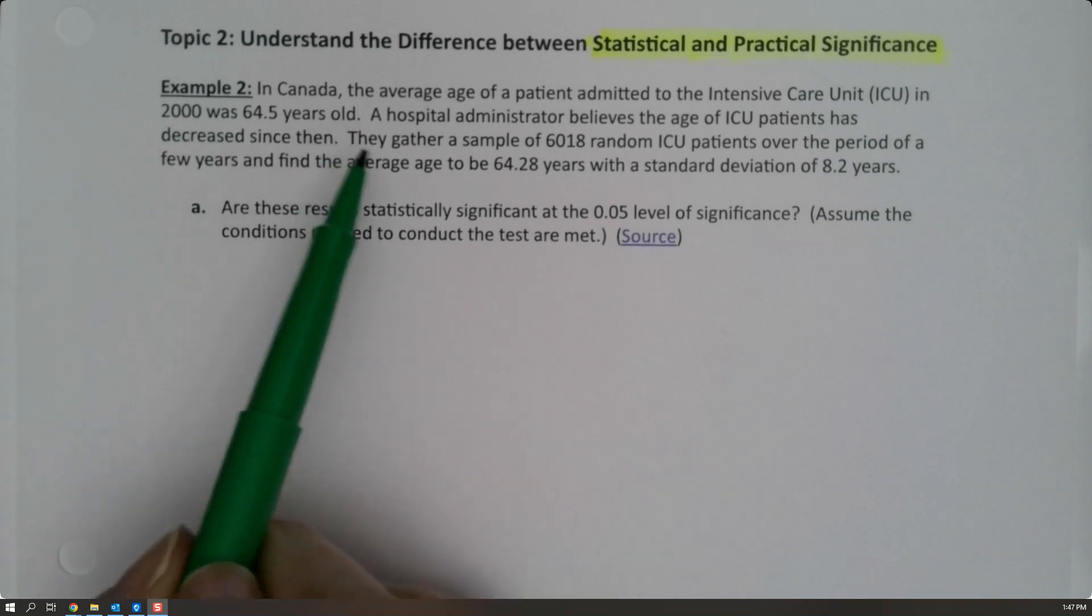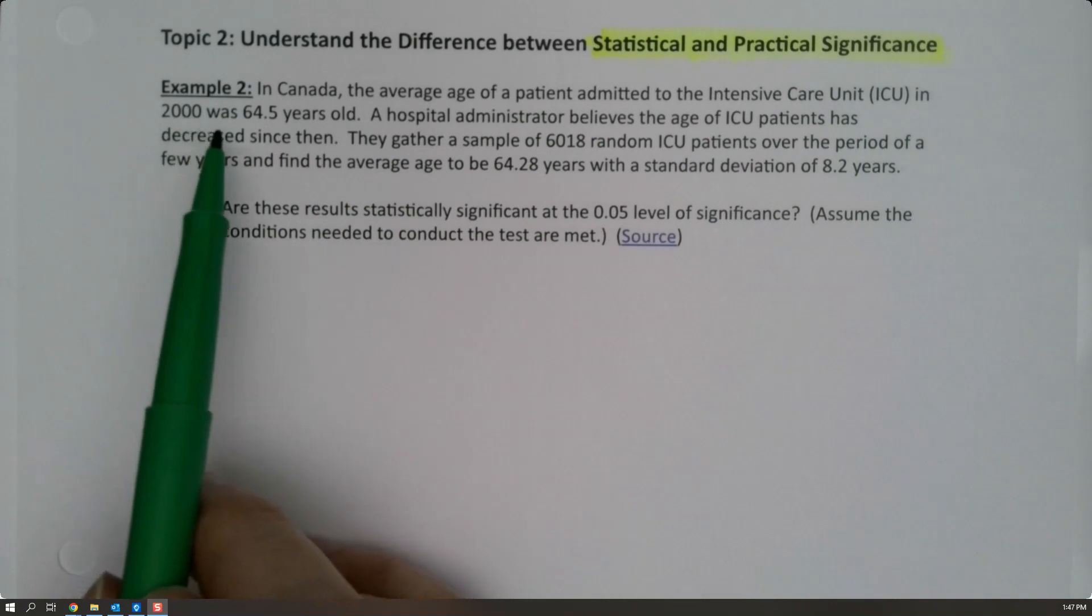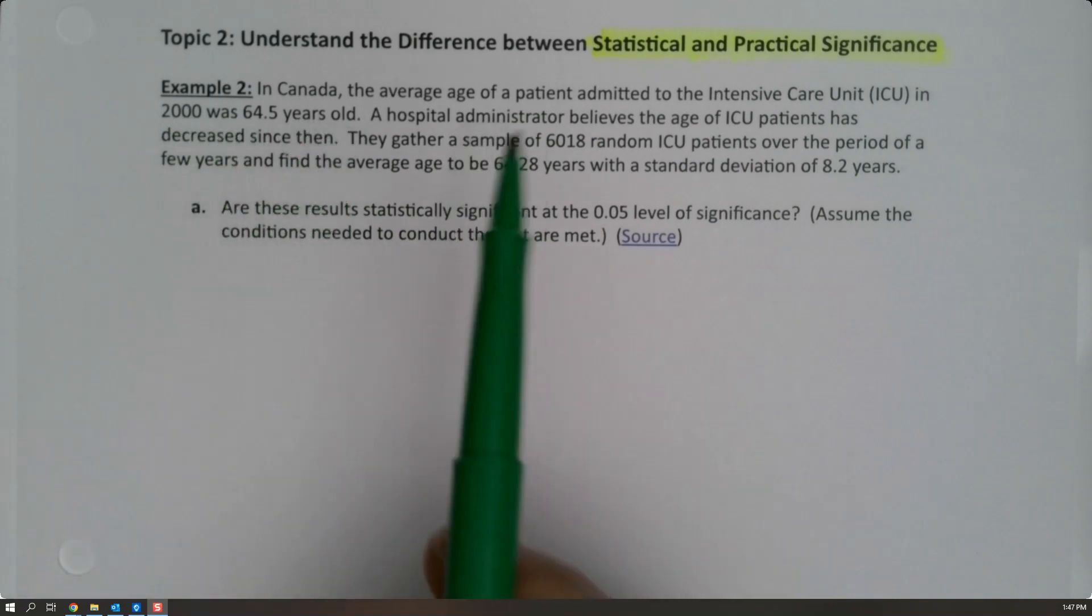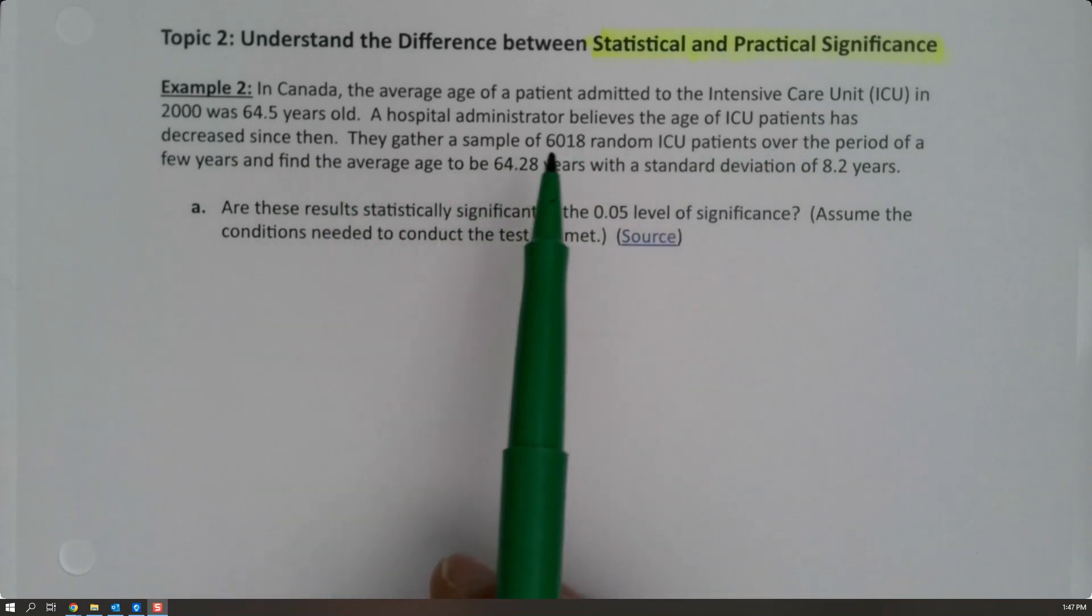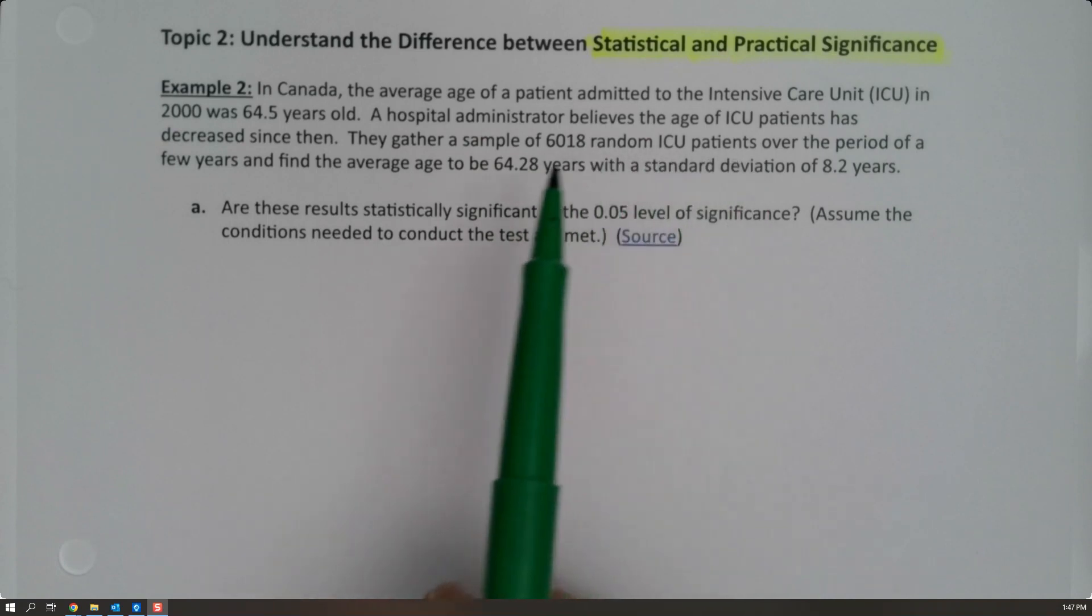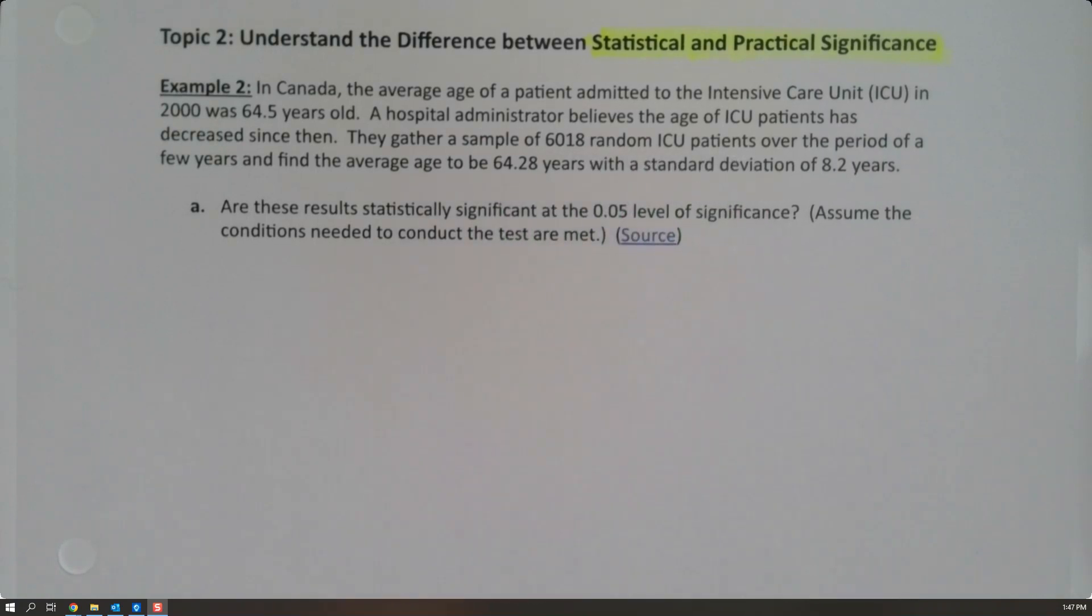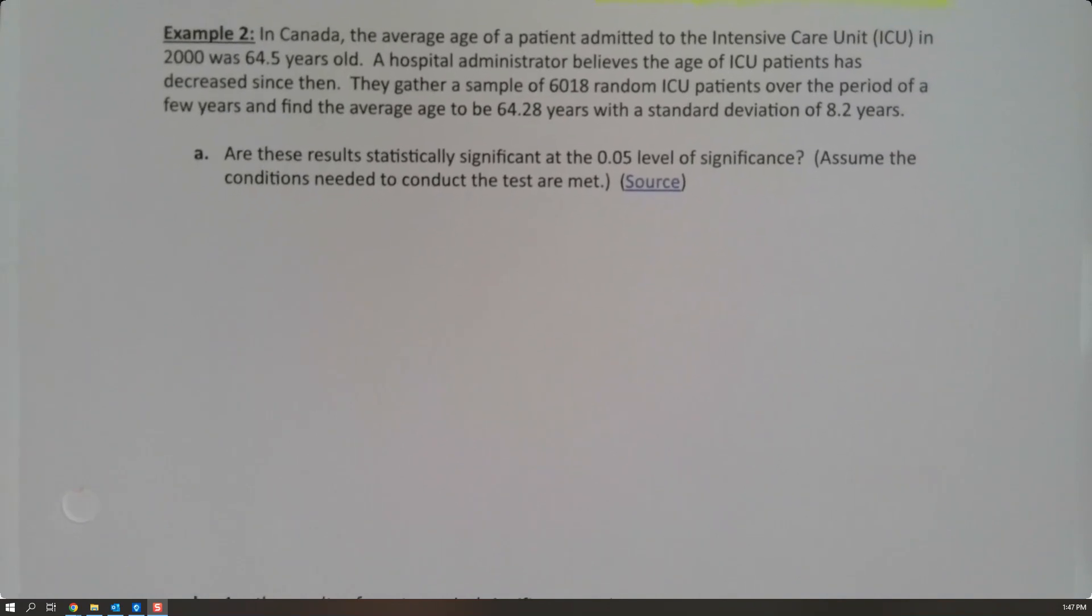In Canada, the average age of a patient admitted to the intensive care unit in 2000 was 64.5 years old. A hospital administrator believes that the age of ICU patients has decreased since then. They gather a sample of 6,018 random ICU patients over the period of a few years, and find the average age to be 64.28 years, with a standard deviation of 8.2 years.